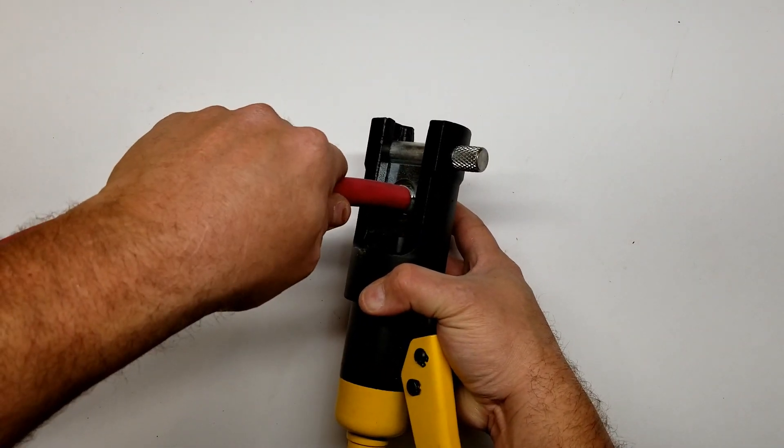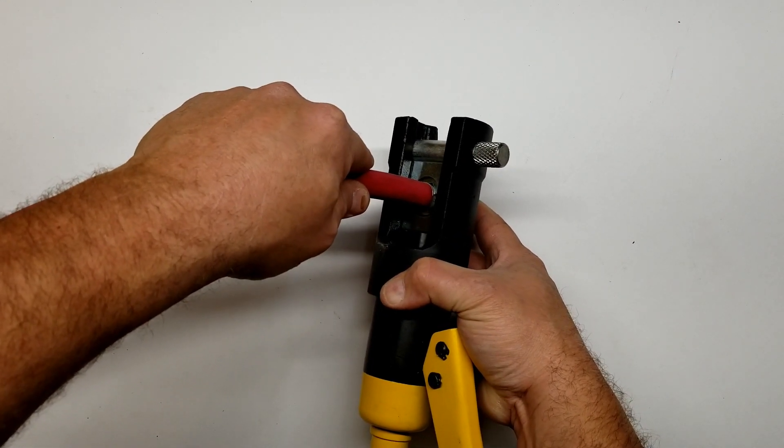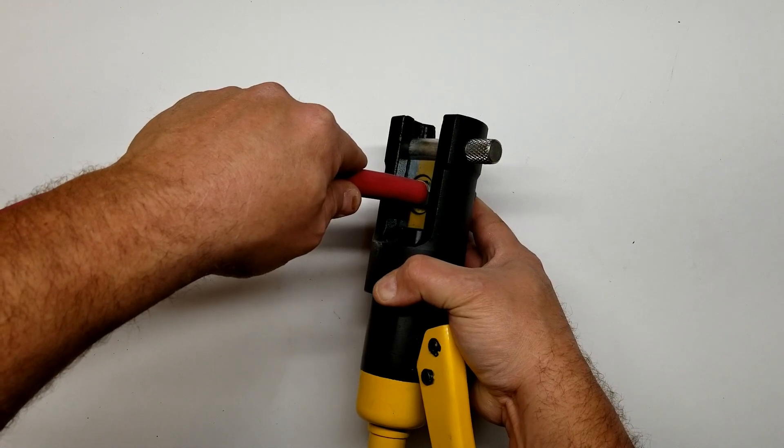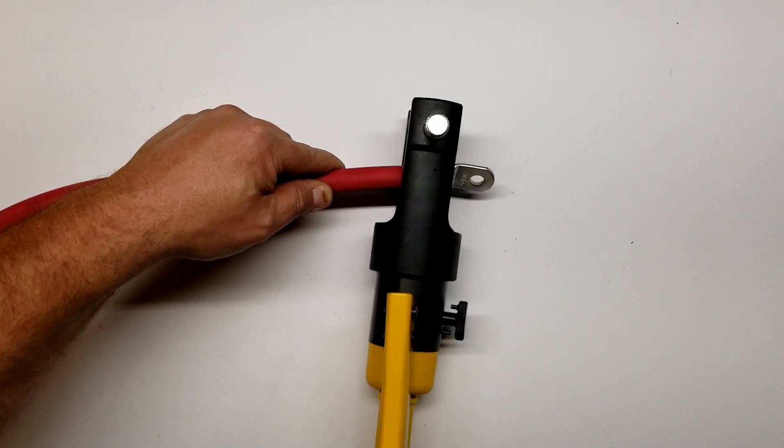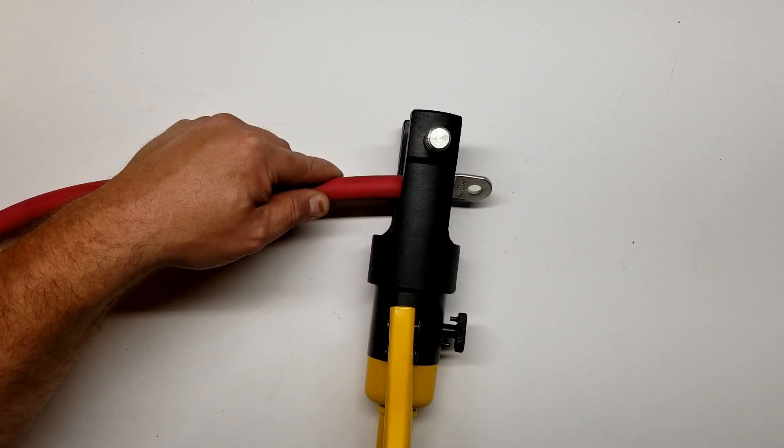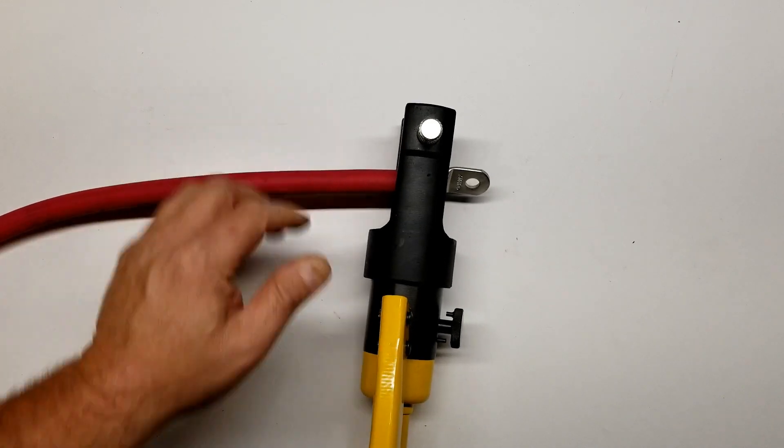It's hard to do on camera and also have leverage to pump the lever. You can see the cable's all the way in and the fitting is centered in the dies. Now I'm just going to crank until the dies bottom out against each other. There we go.